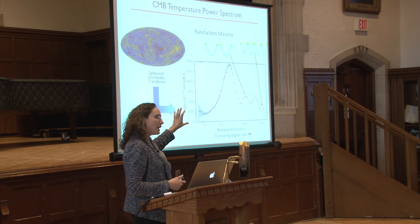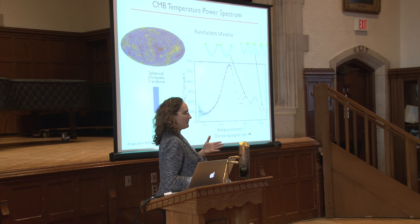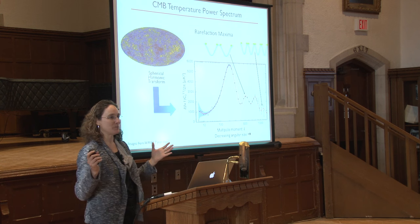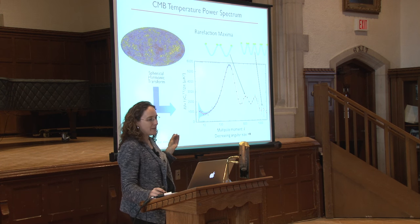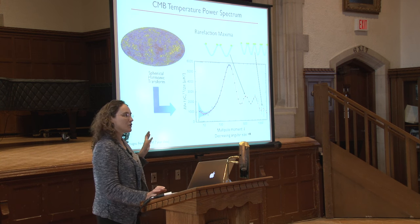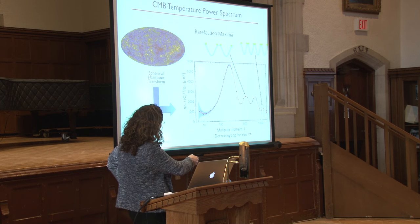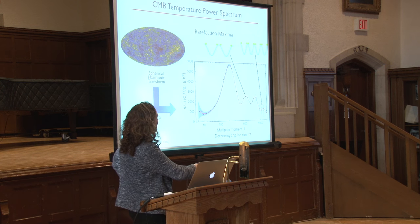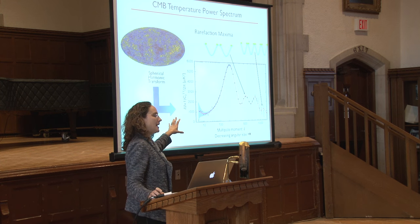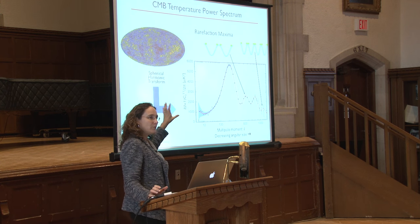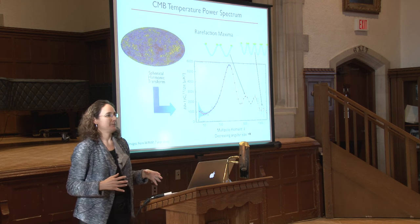All the measurements in between correspond to modes that are neither fully compressed nor fully rarefied. By looking at this angular power spectrum, you're mapping out the fluctuation characteristics of the plasma at the moment of recombination — the moment at which the photons escape. There's an enormous amount of information you can extract from the height of the peaks, their relative heights, the distance between them, and the location of the peaks.